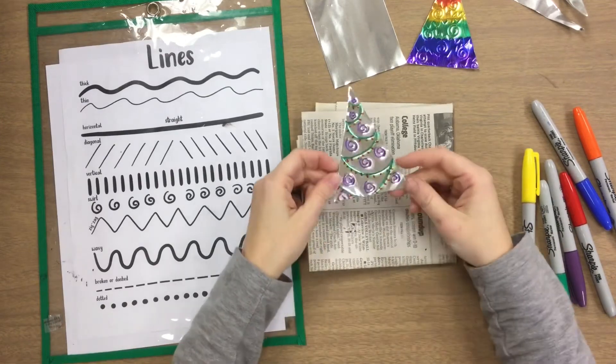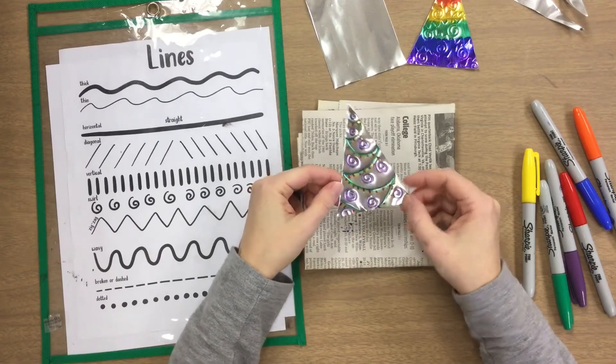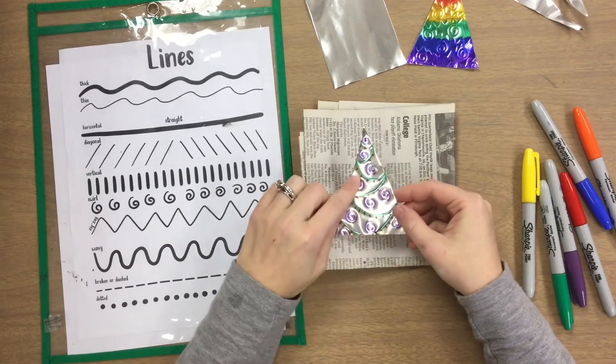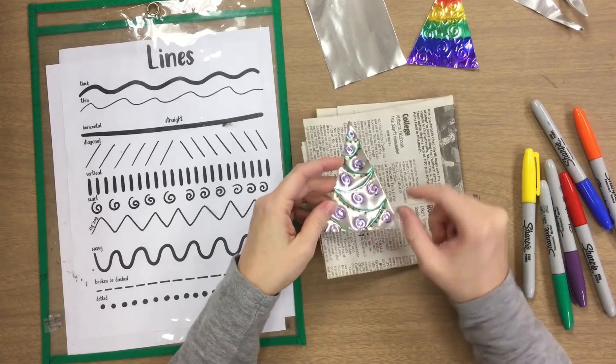You can see I decided to go back in and add more designs on this corner—it was kind of bare. I added a few more lines and then I decided to decorate inside of my lines using the Sharpie, adding a little bit more Sharpie colors.